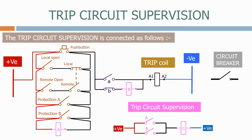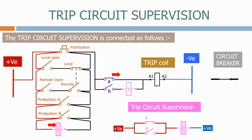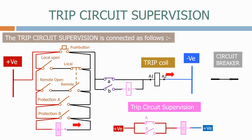Let's now close the circuit breaker and see what happens. In this position the A-coil is energised and current is presently flowing from the positive supply through the A-coil, through the circuit breaker auxiliary switch, the trip coil, onto the negative supply. Because the A-coil has a high resistance there's insufficient current to operate the trip coil. The A-coil is now keeping the C-coil energised, indicating that the trip circuit is healthy.